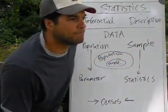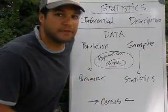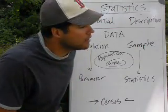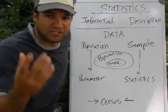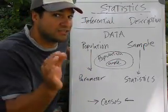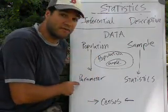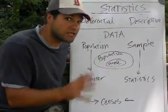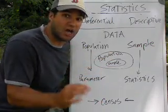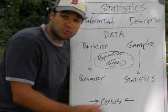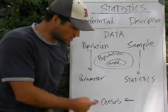Suppose I'm curious about the average height of a South High freshman. I could measure the height of all freshmen and find the average. If I take the entire population and measure them all, I get the exact average height, and that's called a parameter. When you take information from all of the population and make a calculation — a numerical summary of the entire population — that's called a parameter. Parameters come from populations.